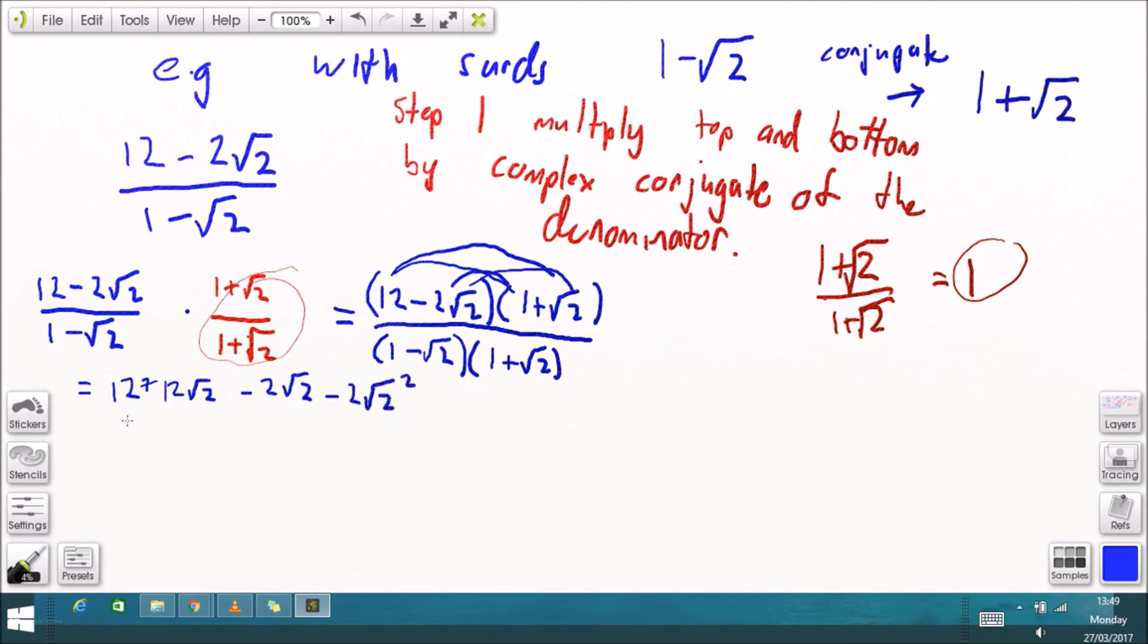and we'll do the denominator later so first things first, root 2 squared is just 2 because the root and the square are opposites so that's 12 minus 4 and your surd terms is 12 root 2 minus 2 root 2